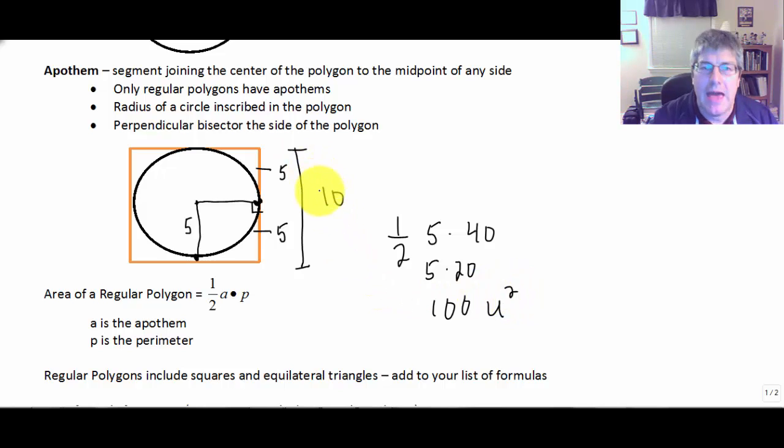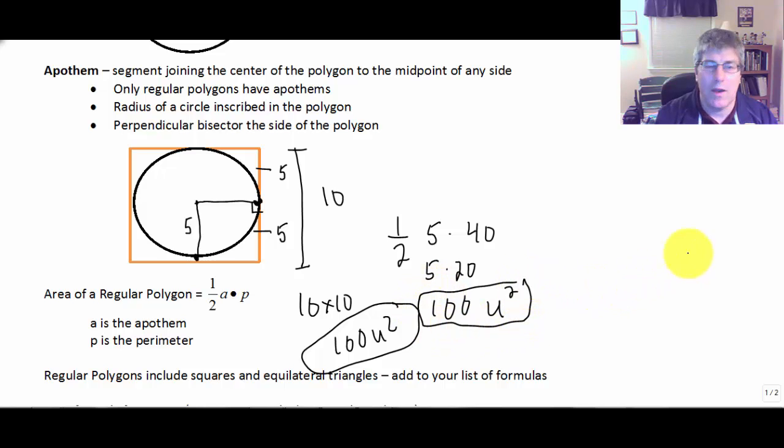Now, we already knew that because if a side is 10, we also know that it's 10 by 10, and it would be 100 units squared. But you can see here that it works either way.